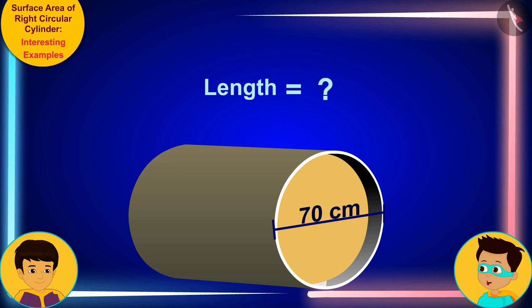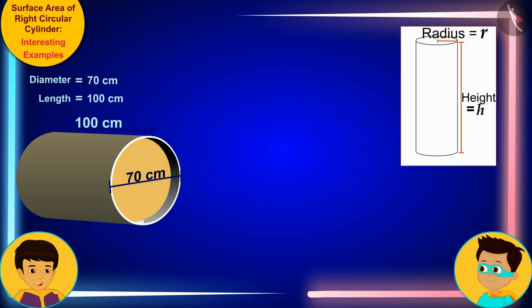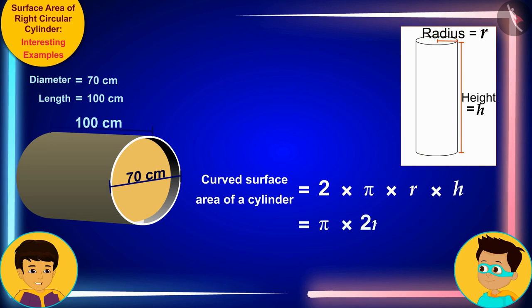Now look Thomas, we know that the curved surface area of a cylinder is the product of 2πr and h, where r and h are the radius and height of the cylinder respectively, which we can also write as the product of πdh.